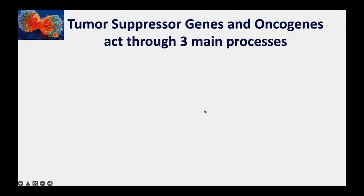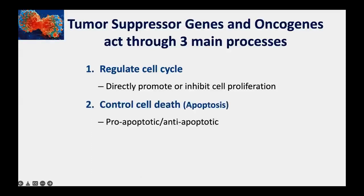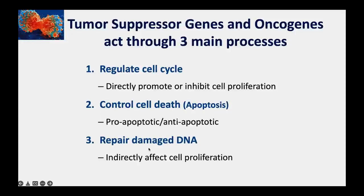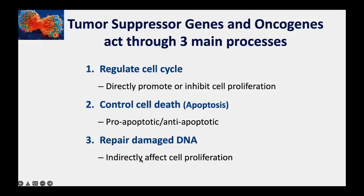These tumor suppressor genes and oncogenes act through three major processes. First, they can directly regulate the cell cycle—turning cell division on or off. Second, they control cell death, with some genes promoting death and others preventing it. Third, they are involved in repairing DNA damage. If damage is not repaired, mutations can accumulate, indirectly promoting cell proliferation and cancer development.